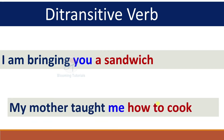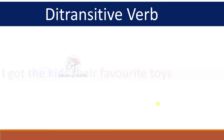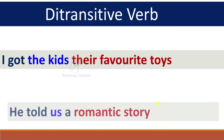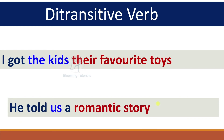'My mother taught me how to cook.' My mother taught what? How to cook — direct object. To whom? Me — indirect object. 'I got the kids their favorite toys.' I got what? Their favorite toys — direct object. To whom? The kids — indirect object. 'He told us a romantic story.' He told what? A romantic story — direct object. To whom? Us — indirect object.